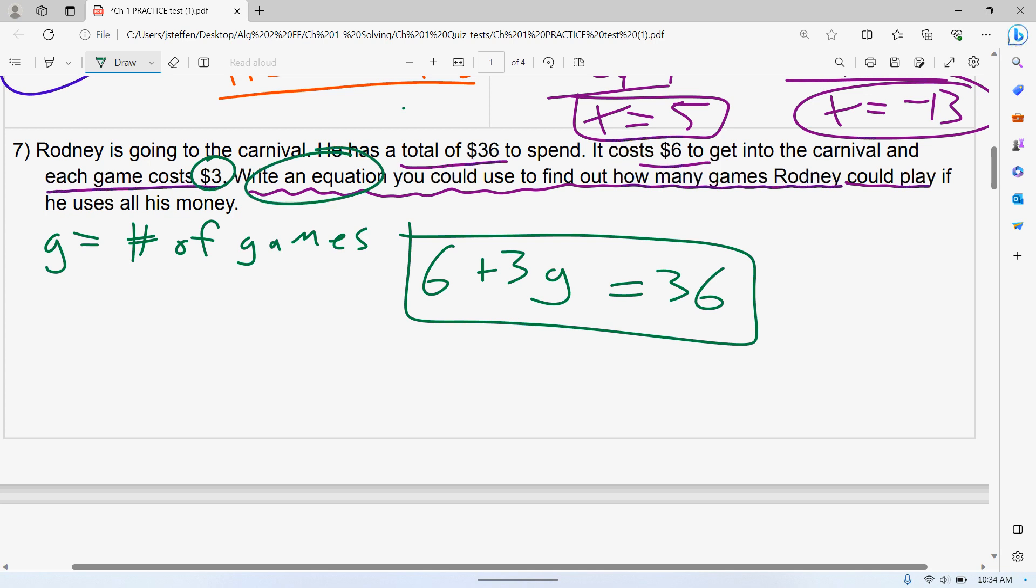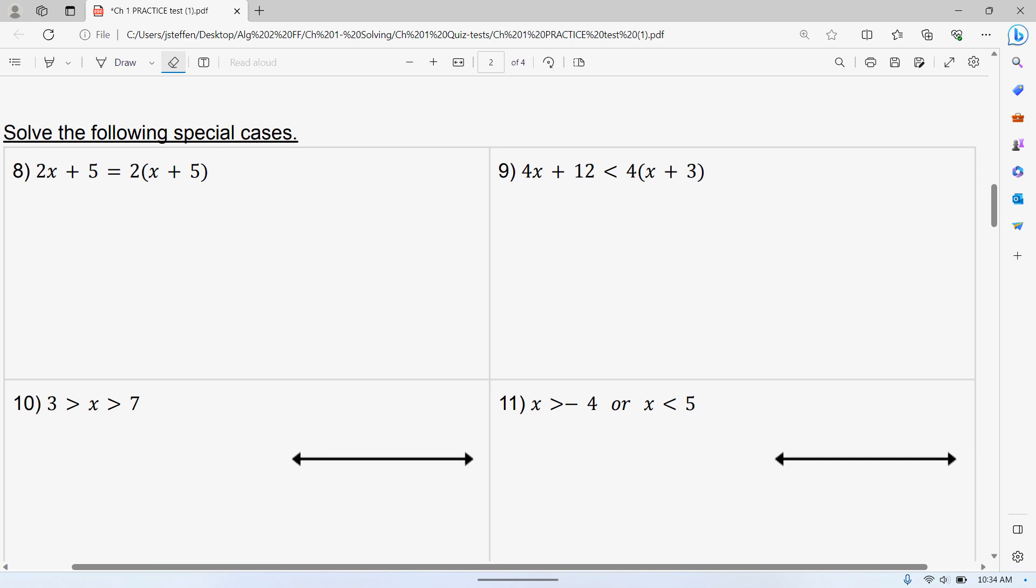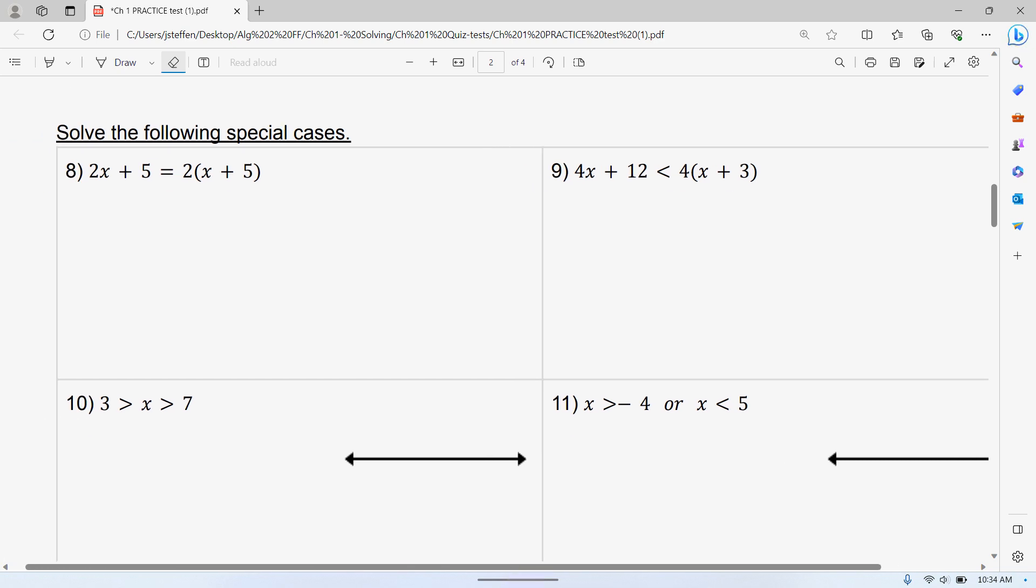That is the equation you're looking for. It doesn't ask you to solve it, just to write the equation, so we can leave it like that. Obviously there are options. 3G plus 6 is equal to 36 is a good one. I will accept if you have something like 3G minus 36 is equal to negative 6 or something crazy like that, anything that's equivalent to that I can deal with, but those are going to be the best ones that I recommend.